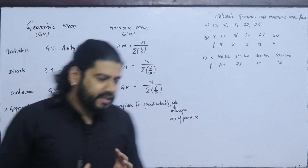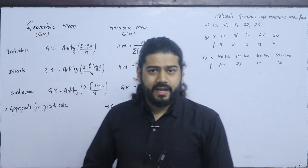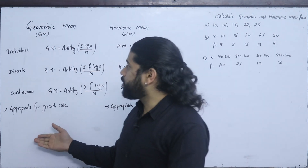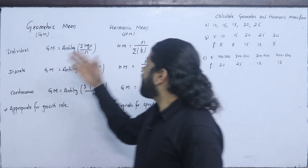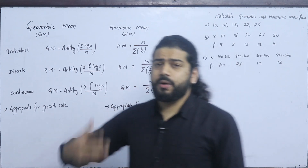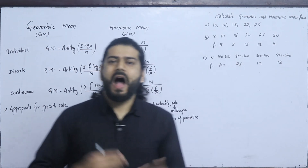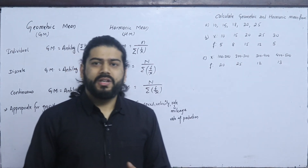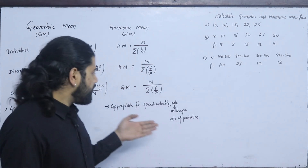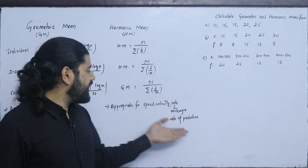What is the geometric mean used for? When dealing with growth rates, the geometric mean is appropriate. When dealing with a time factor — such as per hour, per minute, or per second — the harmonic mean is appropriate. This includes rates like speed, velocity, mileage, and production rate.